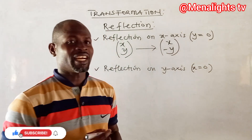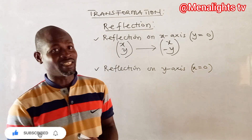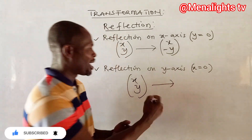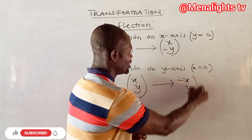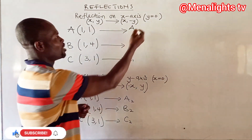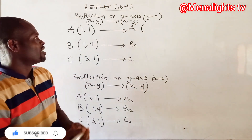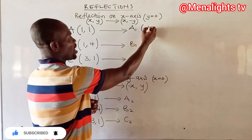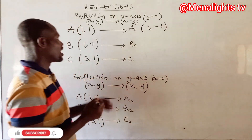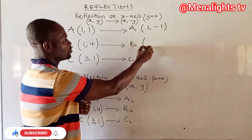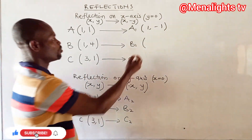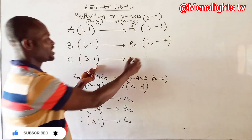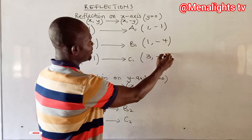When reflecting on the x-axis, the y-coordinate becomes negative: (x, y) maps to (x, -y). So point A is (1, 1) — reflecting on the x-axis gives (1, -1). Point B is (1, 4), so reflecting on the x-axis gives (1, -4). Point C is (3, 1), so it becomes (3, -1).